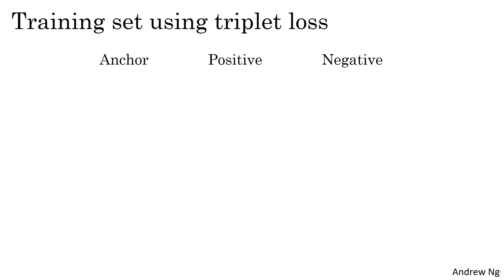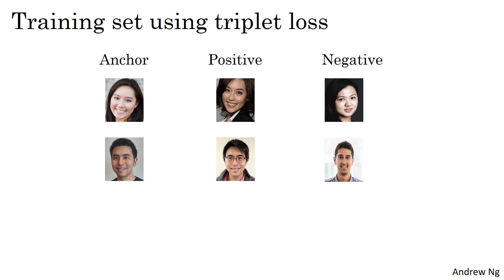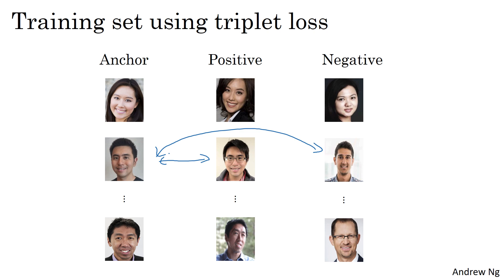To wrap up, to train on triplet loss, you need to take your training set and map it to a lot of triples — each with an anchor and a positive of the same person and a negative of a different person. Having defined this training set of anchor, positive, and negative triples, you use gradient descent to minimize the cost function J. That will have the effect of backpropagating to all the parameters of the neural network to learn an encoding so that d of two images will be small when these two images are of the same person, and large when they are of different persons.